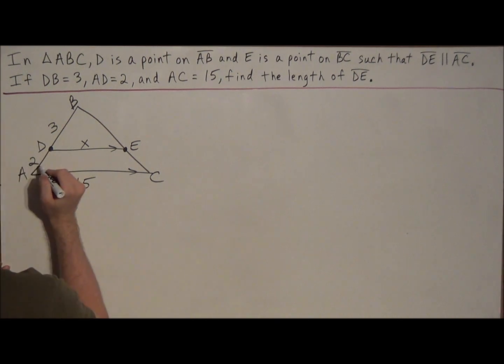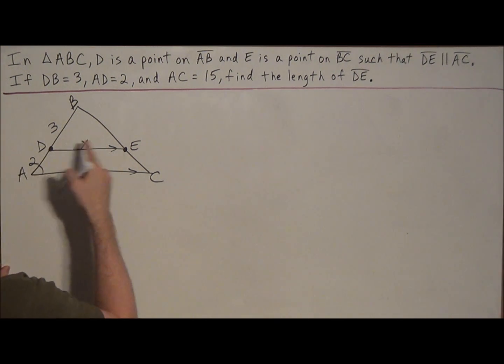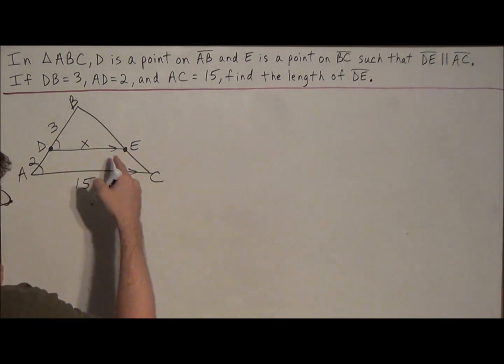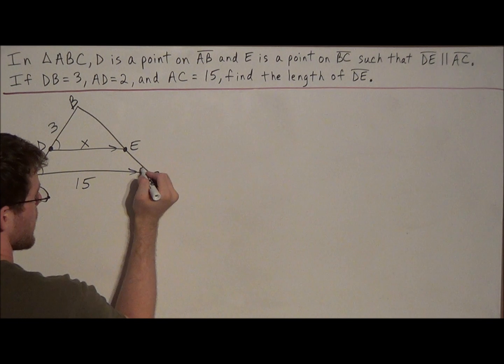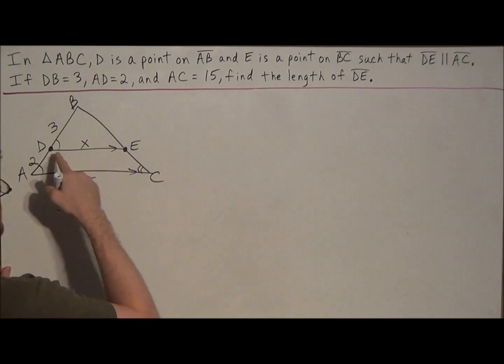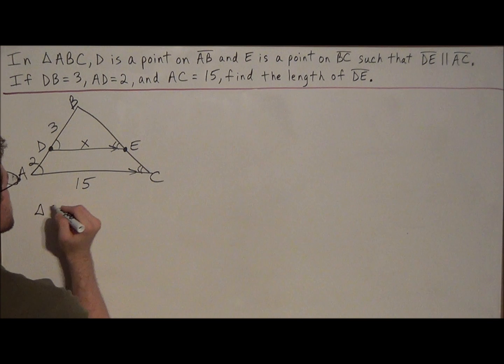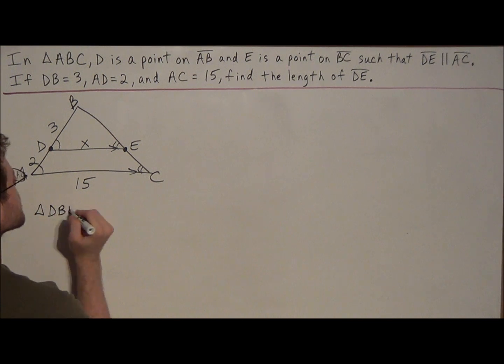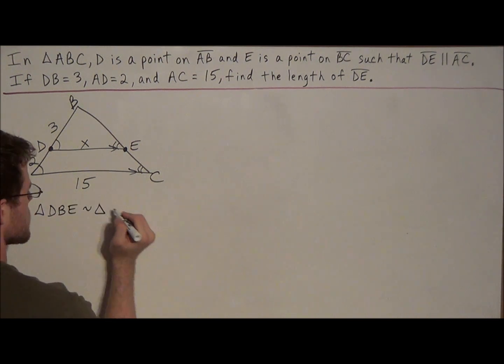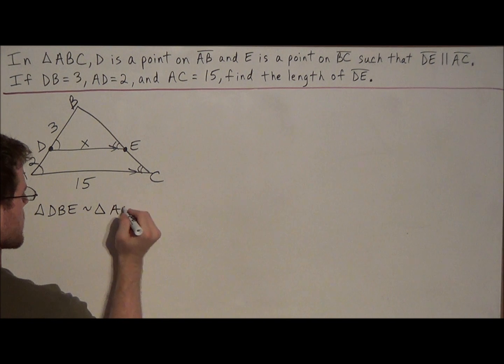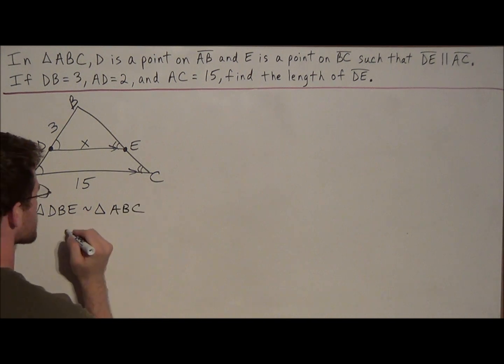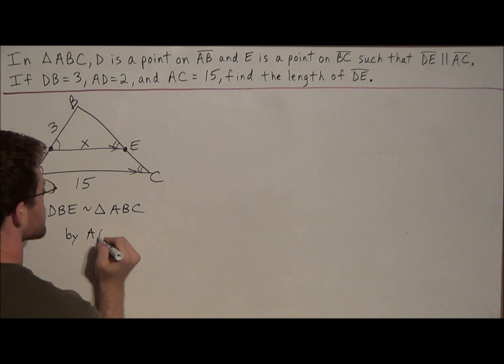So we could say right away that angle A and angle BDE are congruent because they're corresponding. Likewise, a similar argument tells you that angle C and angle DEB are also congruent. So this tells us that we have two similar triangles. We have triangle DBE, if triangle DBE is similar to triangle ABC. And if we wanted to justify this, we could say by angle-angle similarity.